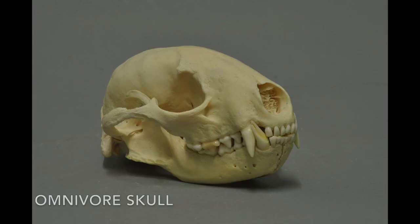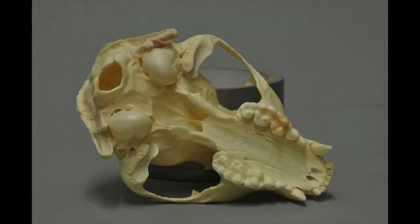Omnivores such as this raccoon or even humans have a more multi-purpose set of teeth. They eat a combination of plant and animal tissue in their diets and have a combination of chewing molars and sharp incisors and canines so they can tear, crush, and otherwise process their food.